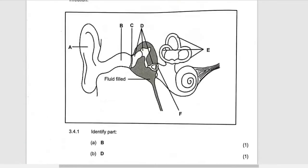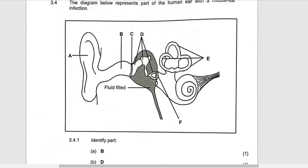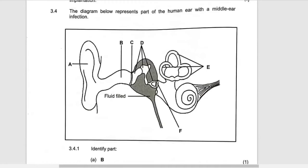State one function of A. This is to collect and direct sound waves to the auditory canal. It collects sound waves from different directions and directs all of it to the auditory canal. That's the meaning.